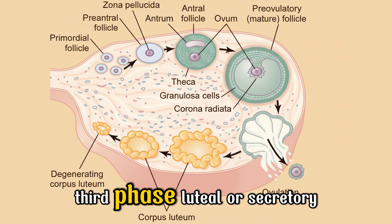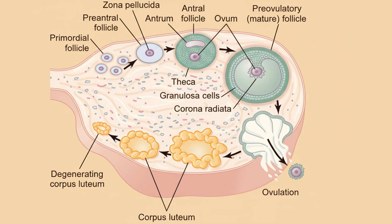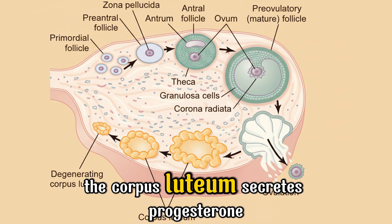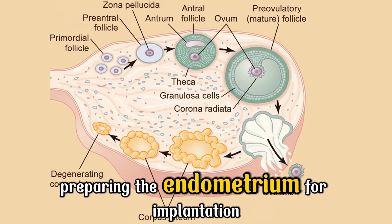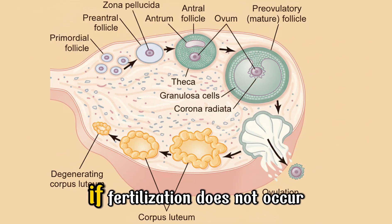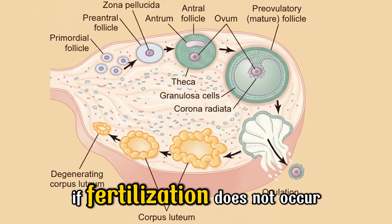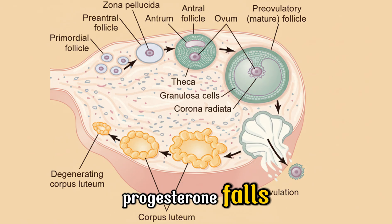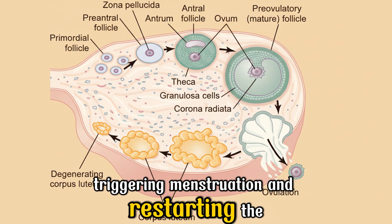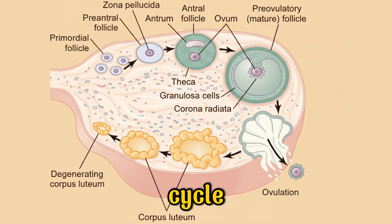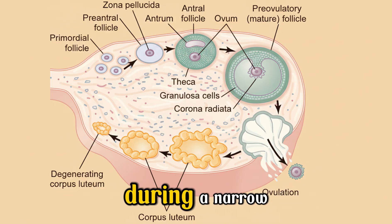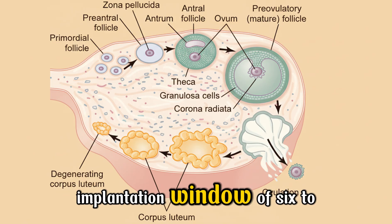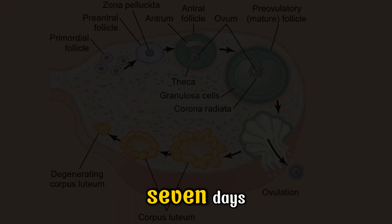The corpus luteum secretes progesterone, preparing the endometrium for implantation. If fertilization does not occur, progesterone falls, triggering menstruation and restarting the cycle. The endometrium is receptive only during a narrow implantation window of six to seven days.